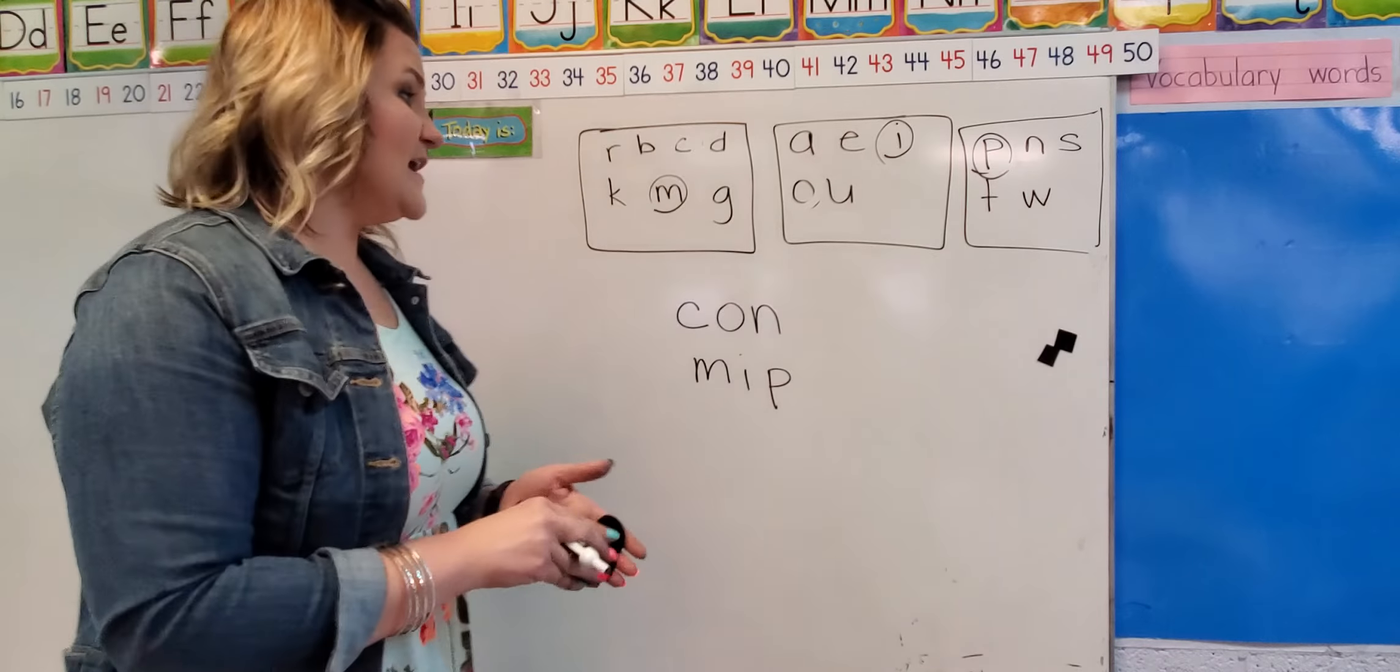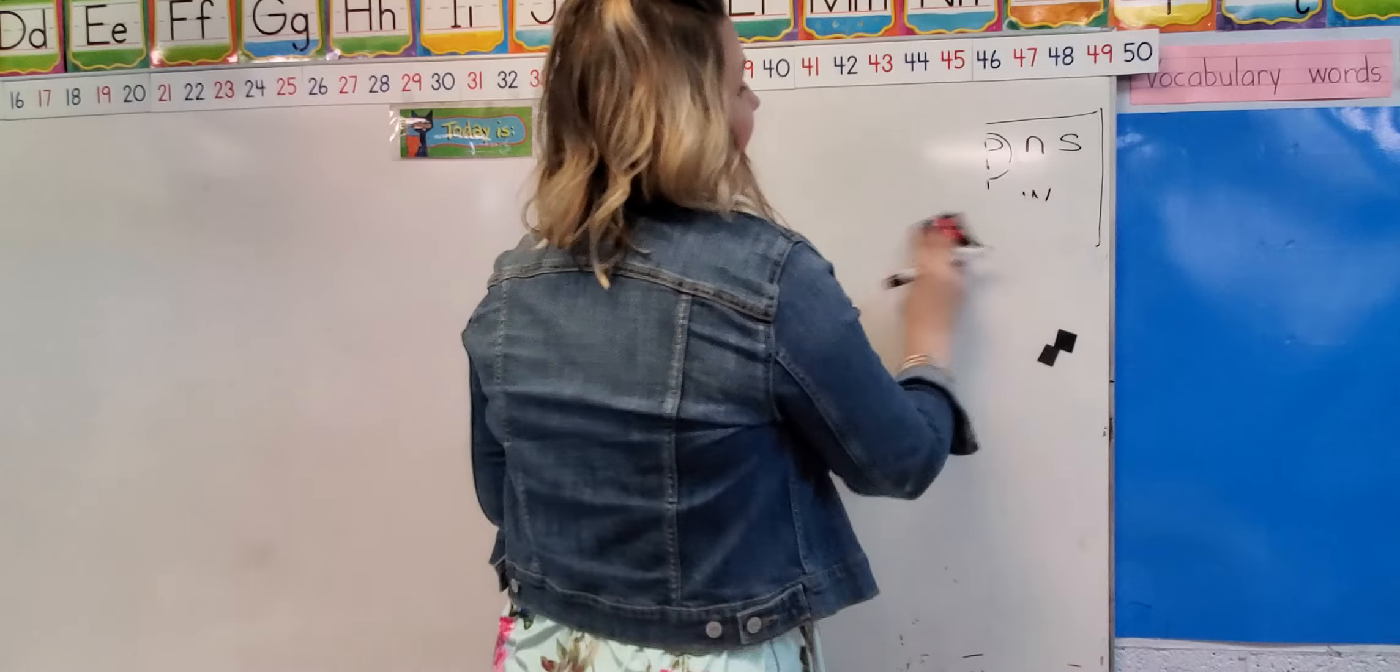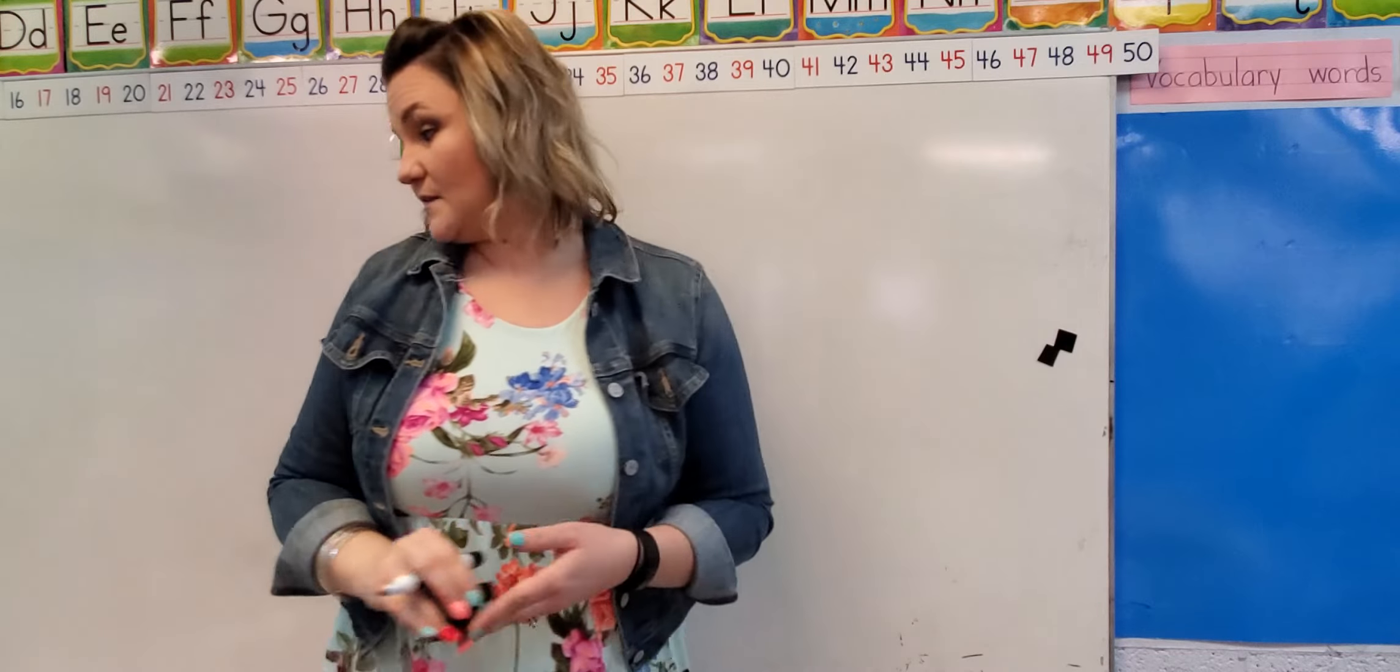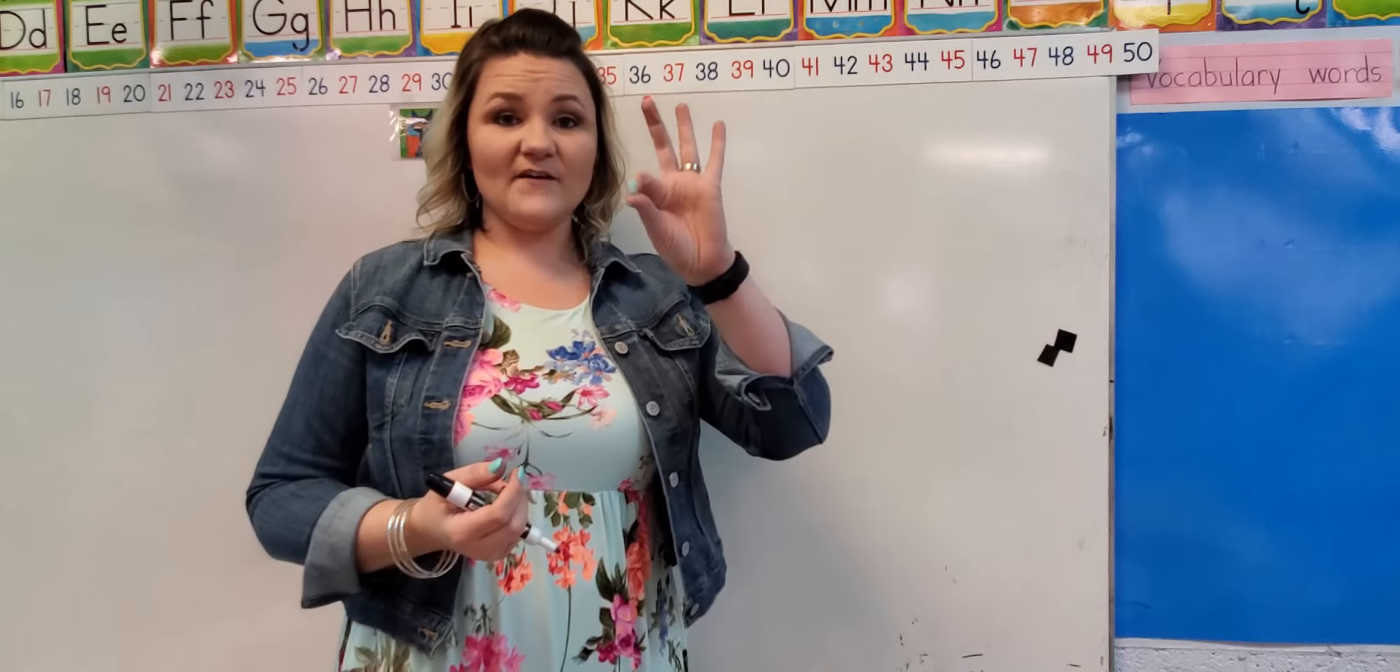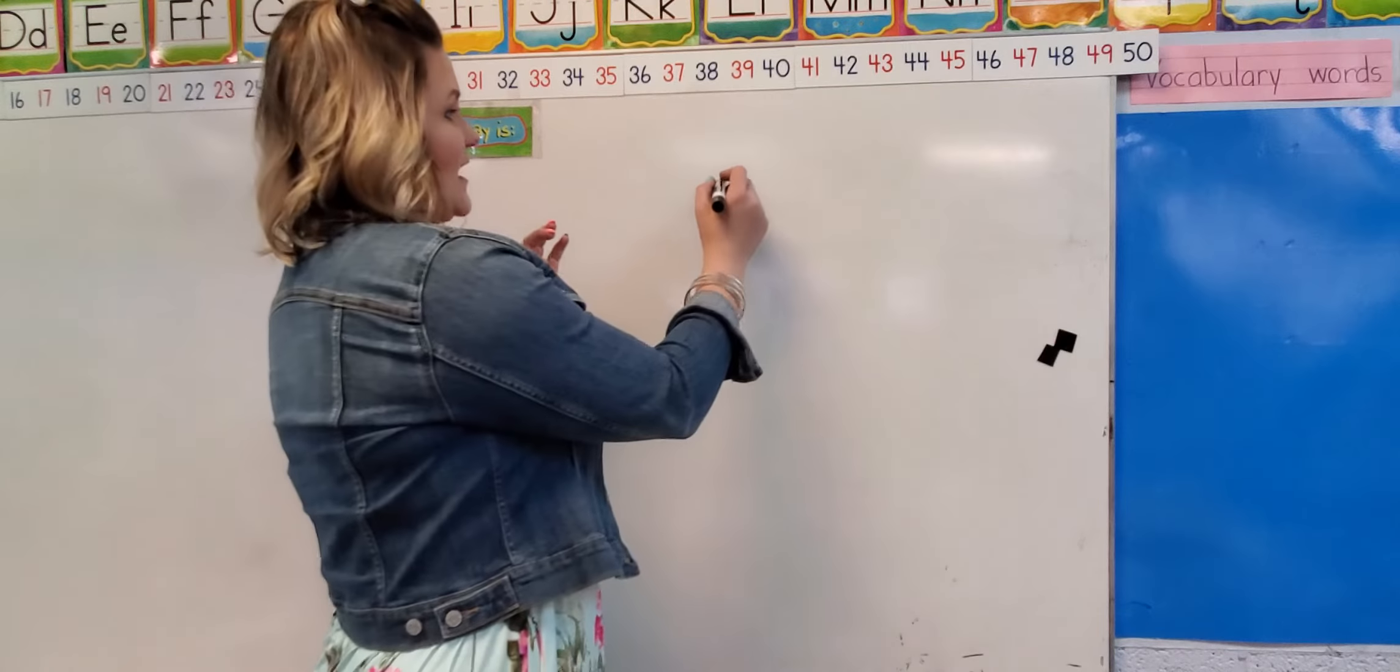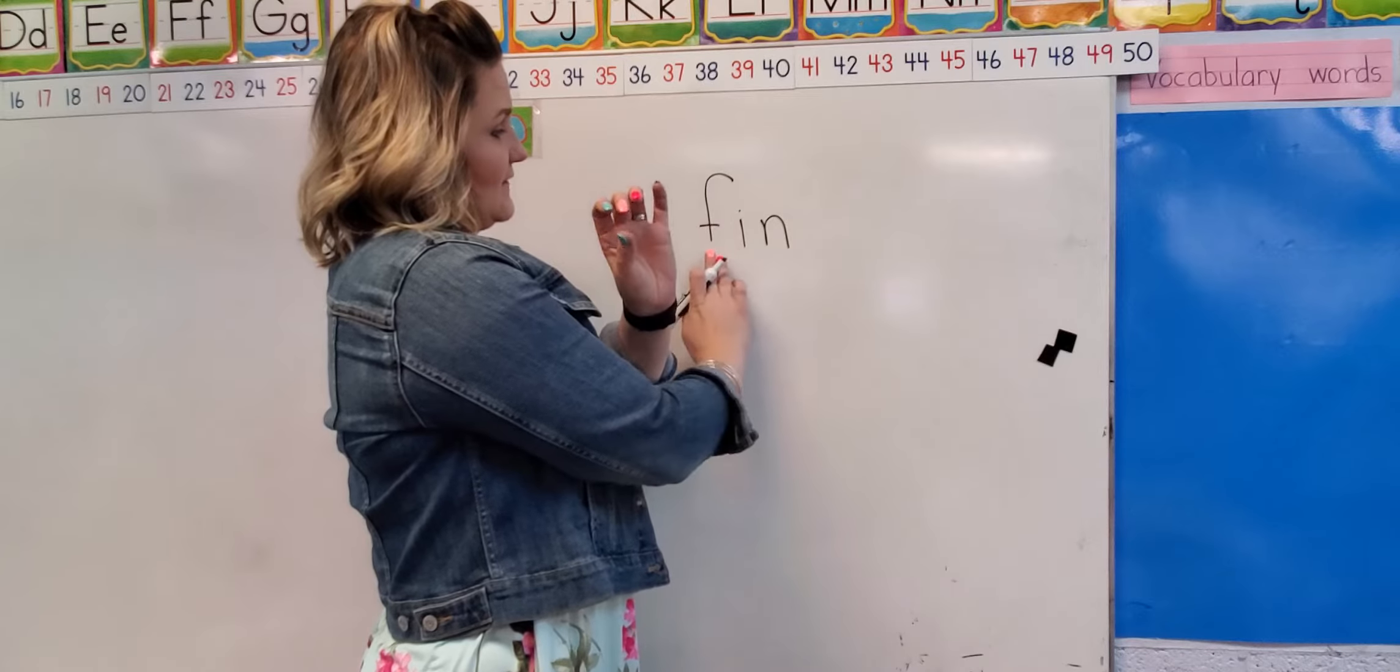Now that we've gone over blending words together, let's see how good you guys are at breaking them apart. I'm going to give you a word and you guys are going to break it apart for me. So that means we're going to tap it out. The first word we're going to do is fin. Get your tapping fingers ready. Fin. F, I, N. Fin. And now you're going to write it. F. So we're going to write an F. F, I. So that's an I. F, I, N. Let's make sure we got it. F, I, N. Fin.